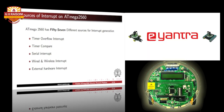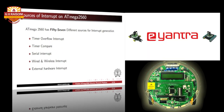The ATmega 2560 has 57 different services for interrupt generation. The Firebird 5 incorporates various interrupt handling mechanisms such as timer overflow interrupts, timer compare interrupts, and serial interrupts for doing specific tasks. In this lecture, we will have a brief overview of the interrupt concept and discuss in detail the external hardware interrupts for position estimation of robots using position encoders.